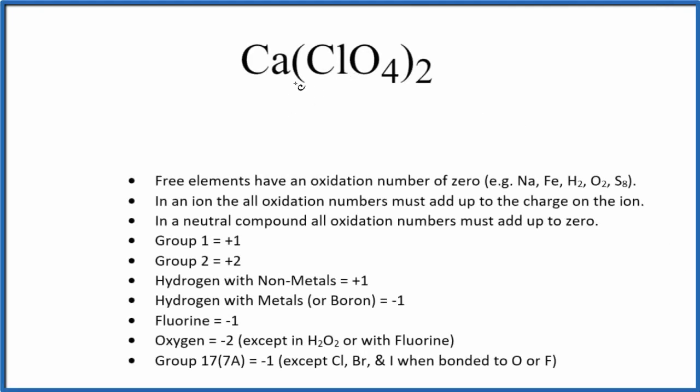Let's find the oxidation number for each element here in Ca(ClO4)2. This is calcium perchlorate. So first off, we note there's no negative or positive after the compound here. That means it's a neutral compound. All the oxidation numbers are going to add up to zero.